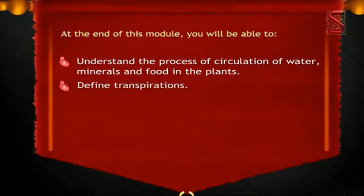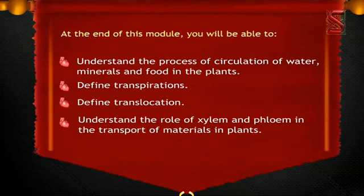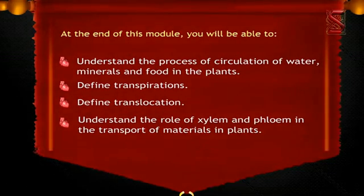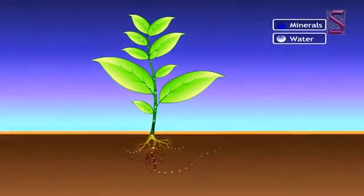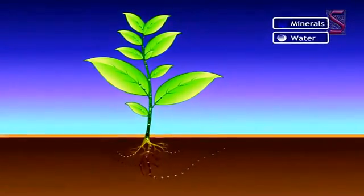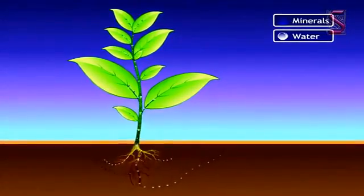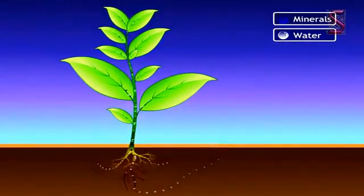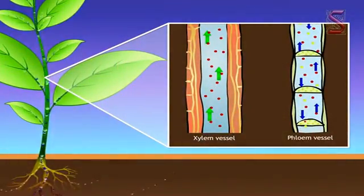You will learn to define transpiration and translocation, understand the role of xylem and phloem in the transport of materials in plants. Plants absorb water containing minerals from soil through their roots. The water absorbed by roots and food prepared by leaves are supplied to the remaining parts of the plant by special plant tissues known as xylem and phloem.